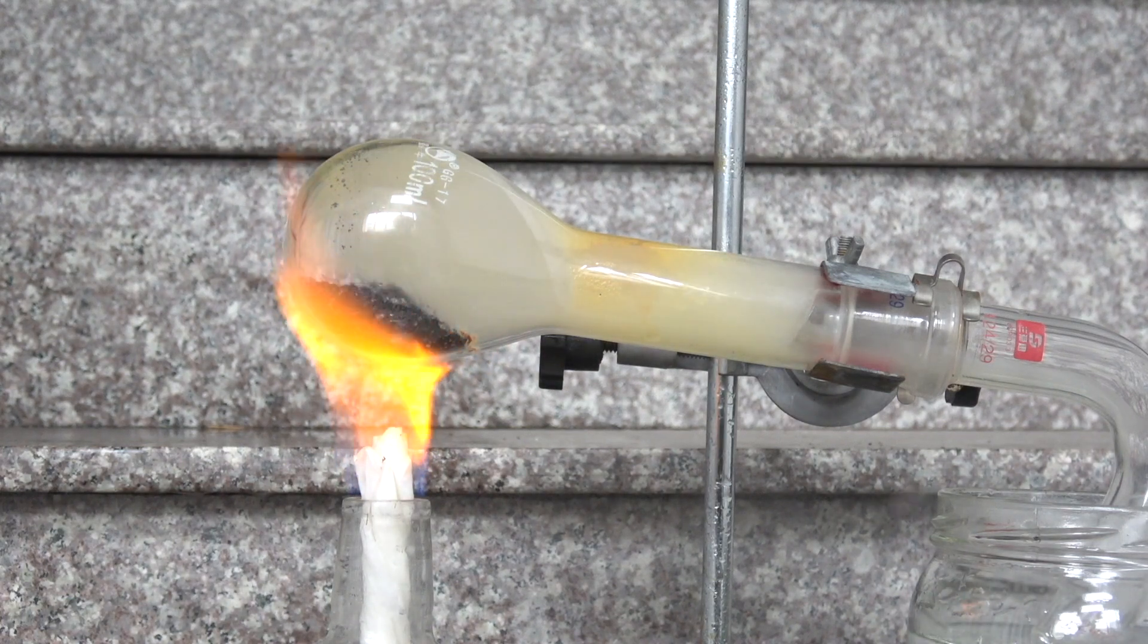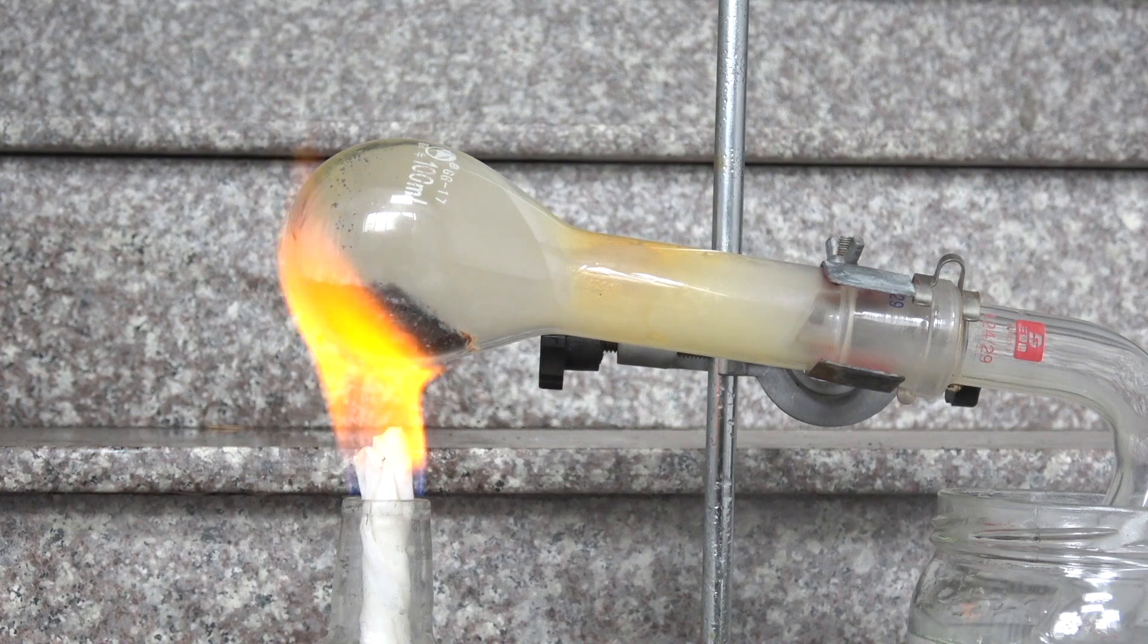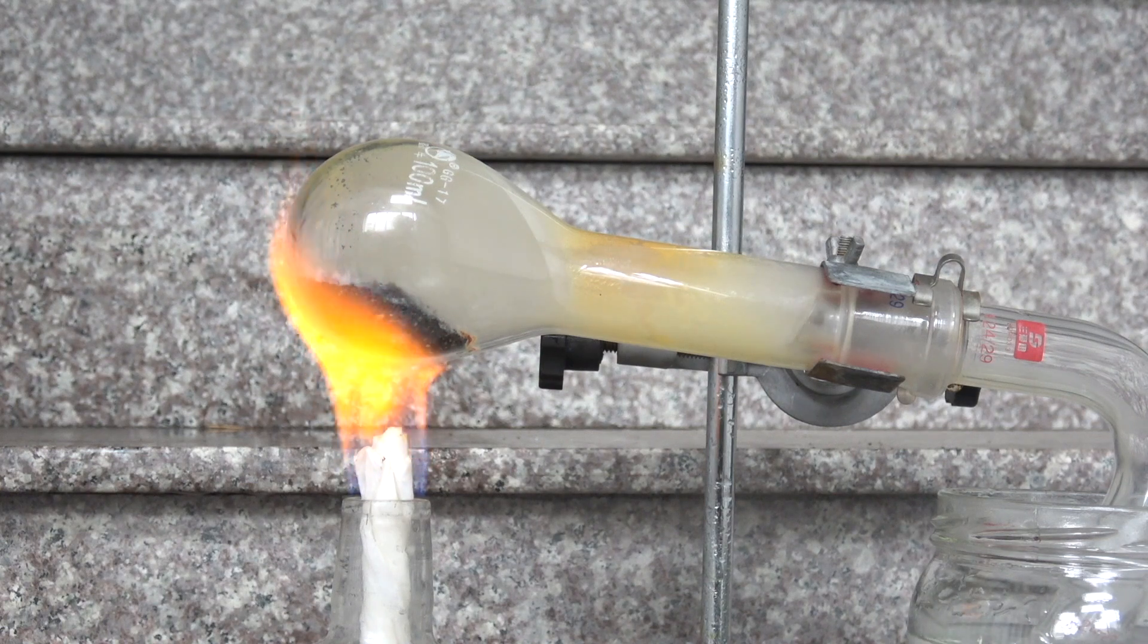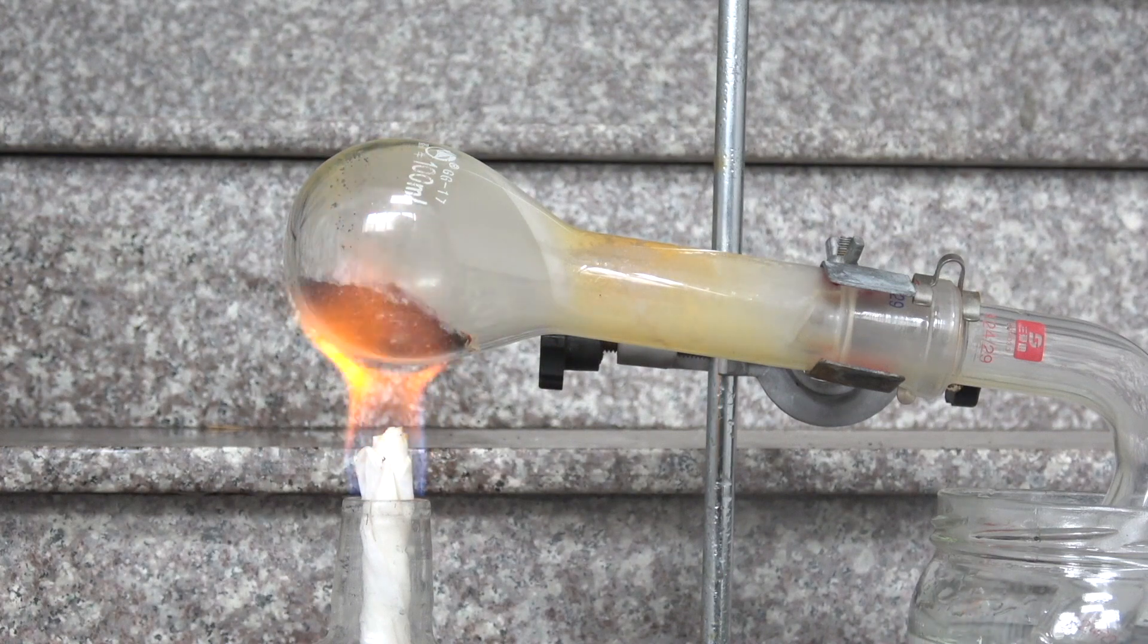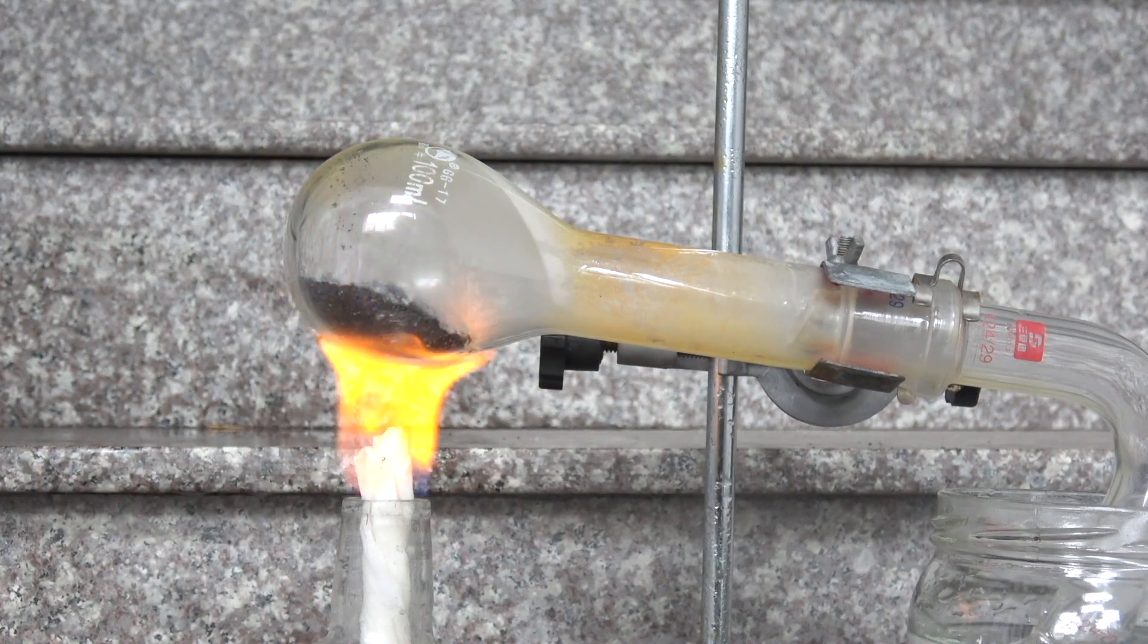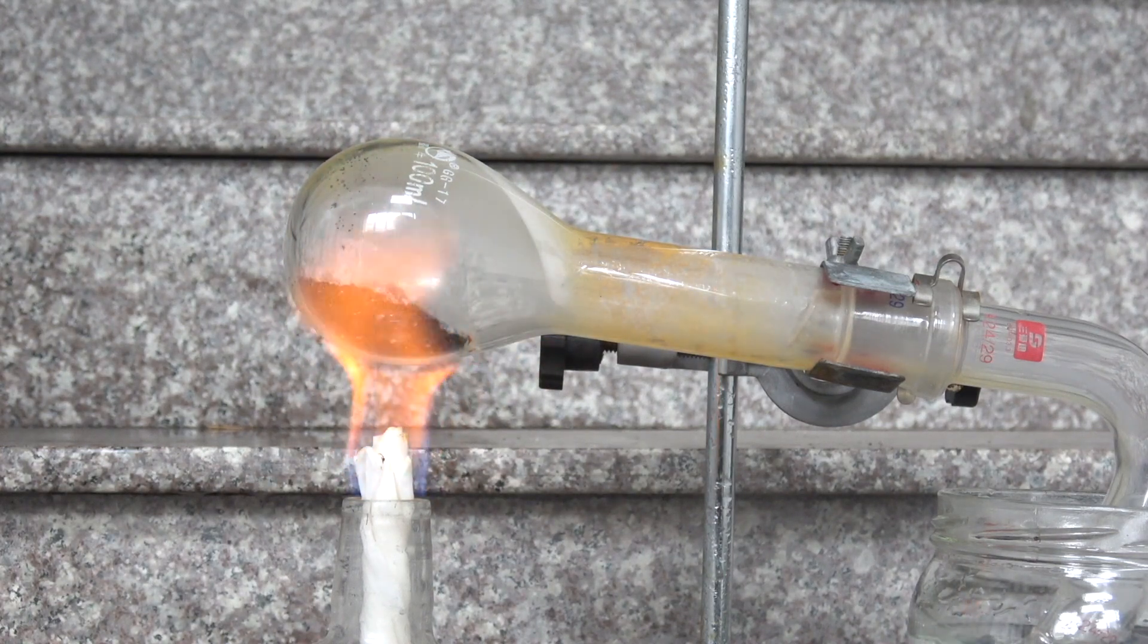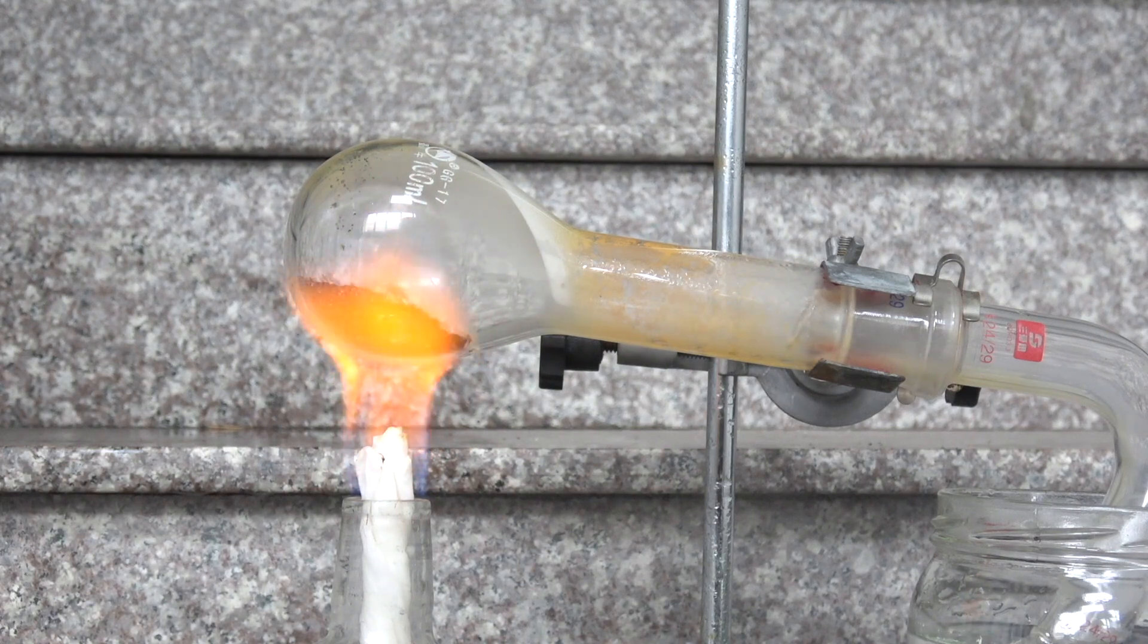However, one way that can prevent this loss of yield is to replace the air in the flask with an inert gas such as nitrogen and argon. I didn't bother because I didn't have any of the gas on hand, and this level of yield loss was acceptable to me.